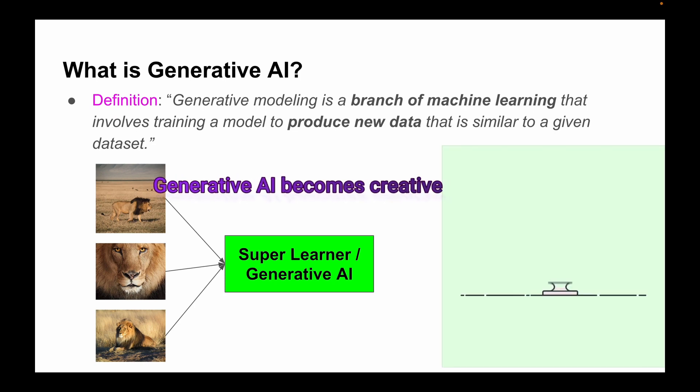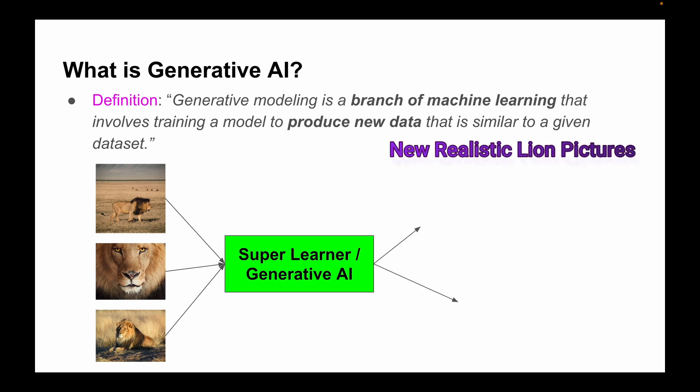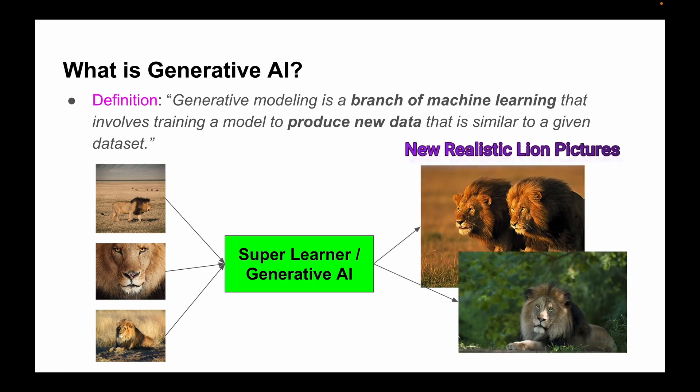Here's where it gets really fascinating. After this super learner or generative AI model learns everything about lions, it becomes creative. It can make brand new lion pictures that nobody has seen ever before.